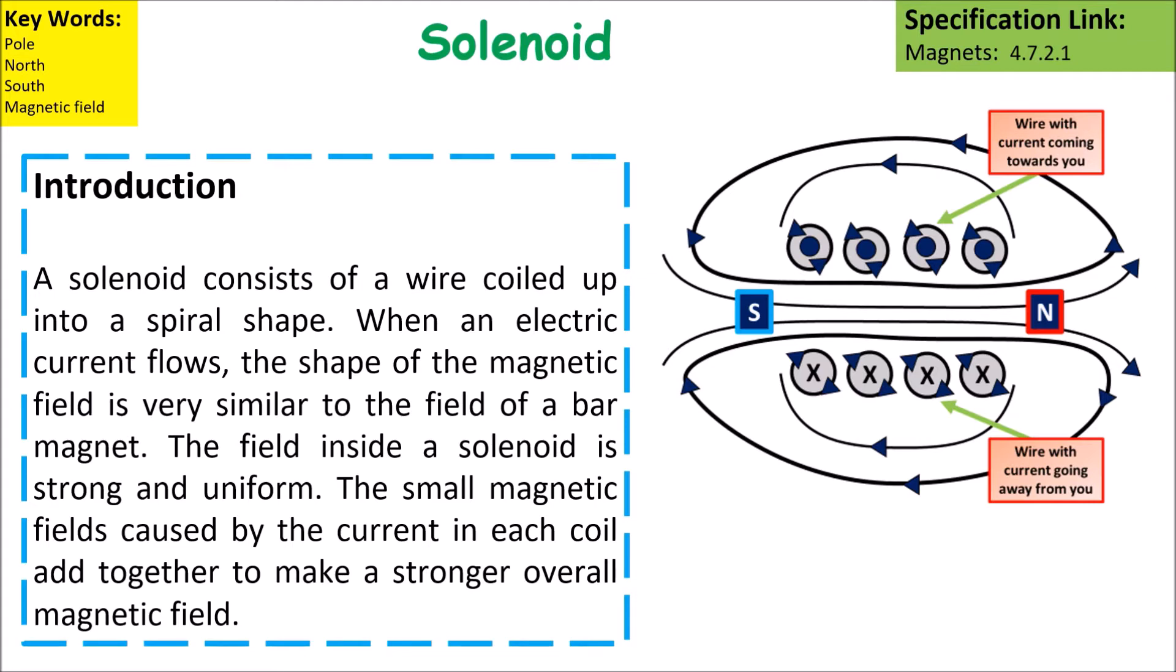The field inside a solenoid is strong and uniform, and the small magnetic fields caused by the current in each of the coils all add together to make a stronger overall magnetic field.